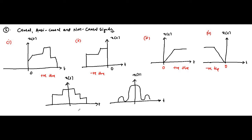For t negative, here it exists for both positive as well as negative. Here also both negative and positive — it exists on both sides. Now, these signals which exist only on the positive side and are zero on the negative side — these are called causal signals. So this is a causal signal. Similarly, this one is also causal.